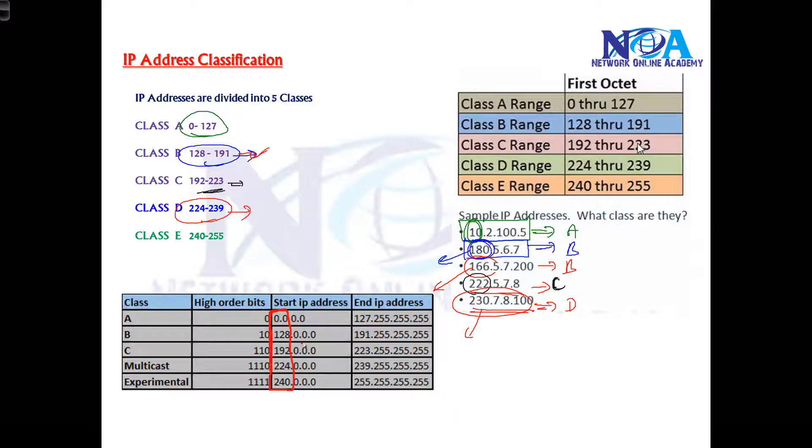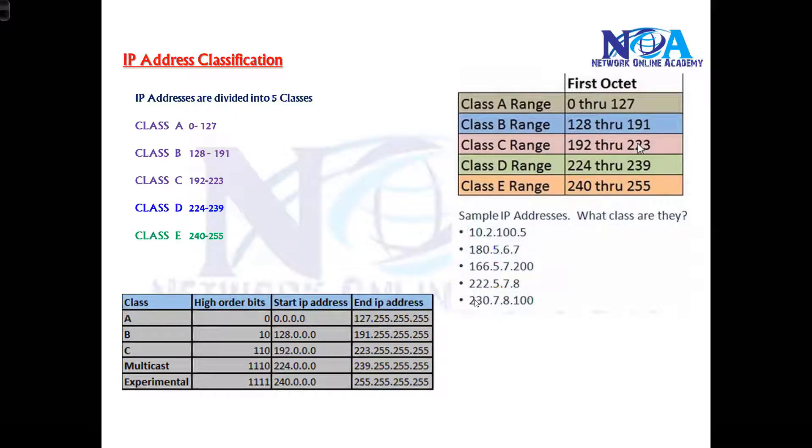If the first portion is in this range, you can see the remaining three portions can be anything from 0 to 255. So that doesn't make any difference. Only see the first octet. Whenever we see any IP address, the first thing we should be in a position to identify which class that IP address belongs.